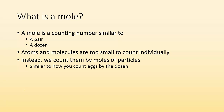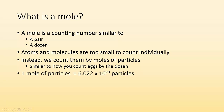You go to the store and you buy a dozen eggs — that's just how it's done. Same thing in chemistry, except this time we use moles. So one mole of particles is equal to 6.022 times 10 to the 23 particles. That could be anything — we could have a mole of oxygen atoms, a mole of methane.